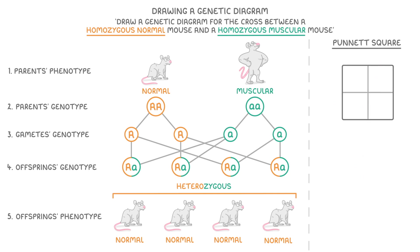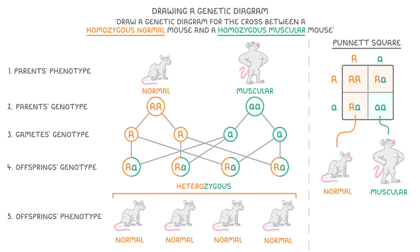For a more interesting example, let's use the Punnett square to work out what would happen if two of these heterozygous normal offspring were to mate together. Since all the offspring had the genotype capital A, lowercase a, we place capital A and lowercase a gametes on the top and the left. Then as we fill in the square, we get one homozygous dominant offspring with a capital AA genotype, two heterozygous offspring, and one homozygous recessive offspring with two lowercase a alleles. So in terms of phenotypes, we would have three that are normal because they all have a dominant allele being expressed, and then one muscular offspring from the homozygous recessive.